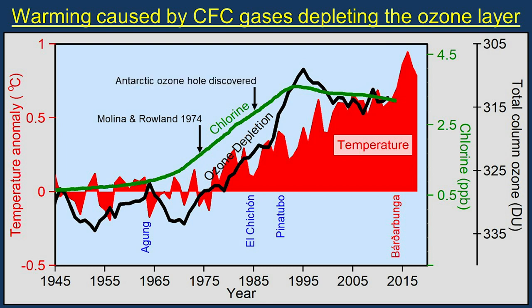In 1985, scientists discovered widespread depletion of the ozone layer over Antarctica during the winter, forming what became known as the Antarctic Ozone Hole, where ozone concentrations were reduced by 50 to 70 percent compared to levels observed before 1970.